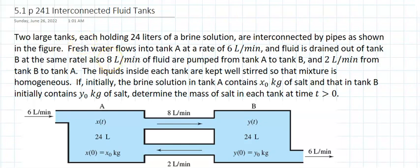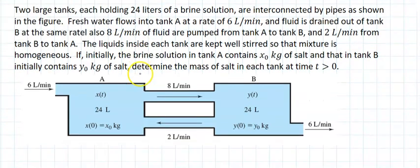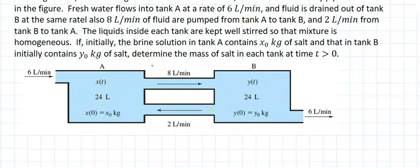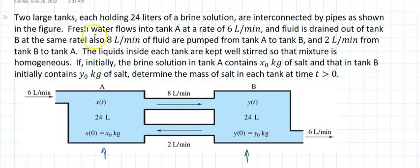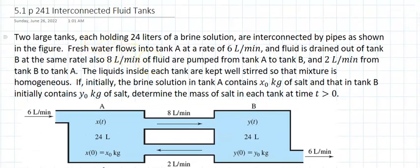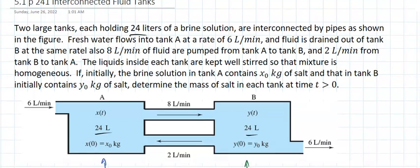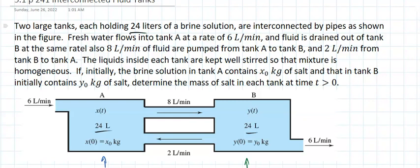Section 4.5.1 on page 241 talks about interconnected fluid tanks. Suppose we have tank A and tank B. Two large tanks, each holding 24 liters of brine solution, are interconnected by pipes as shown.